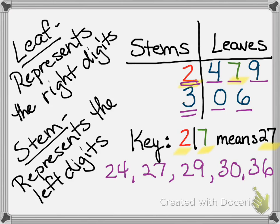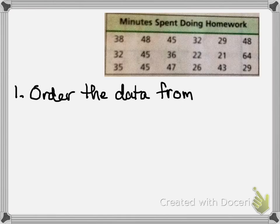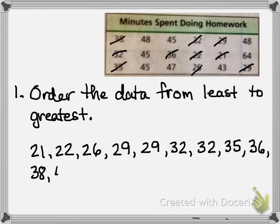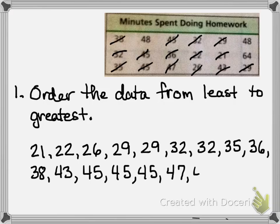Let's take a look at how to make one of these. Here we've got a set of data — the number of minutes that the average sixth grader spends doing homework. The first step is to list the data from least to greatest. As I list the data in order, I like to cross out what I've used so I can tell I've already included it, and if I make a mistake, I'll easily be able to tell because I won't have crossed out that number.